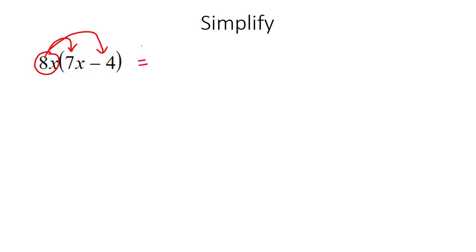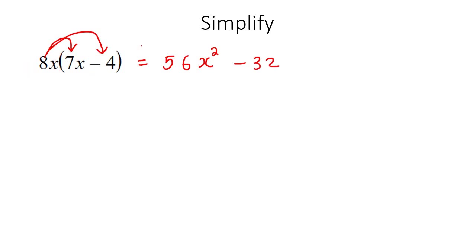That will give us 56 — because that's 8 times 7 — and then x times x is x to the power of 2. Then minus 32, because that's 8 multiplied by negative 4, and then just x.